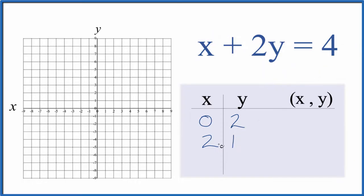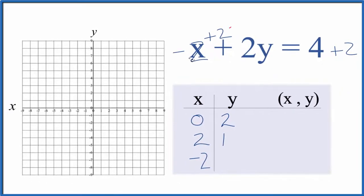And we could graph with just two points. I like to do three in case I've made an error here. So I'm going to say negative 2 for x. So negative 2 plus 2y equals 4. Let's add 2 to both sides. Those are gone.